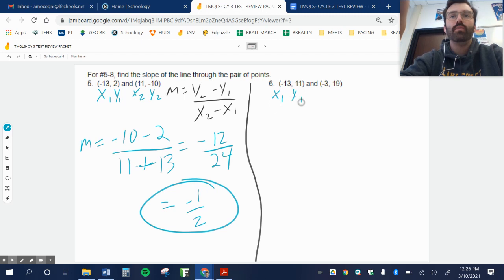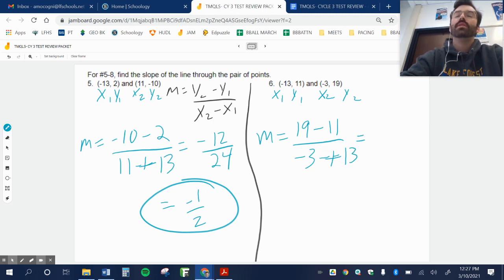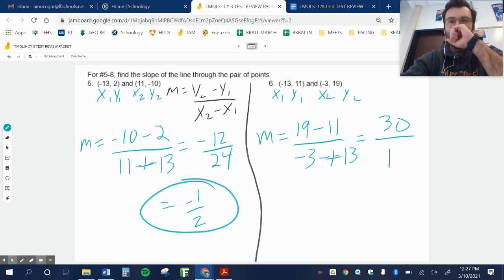x1, y1, x2, y2. M equals y2, which is 19, minus y1, which is 11, over x2, which is negative 3, minus negative 13. So one big plus, equals. What, that's going to be 30. Over, excuse me, 10. 10, that's 3.